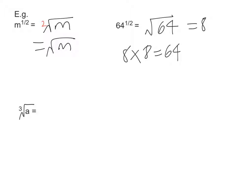In the next question I'm going the opposite way — changing from the surd form back into the index form. So the cube root of a is actually a to the one third power.